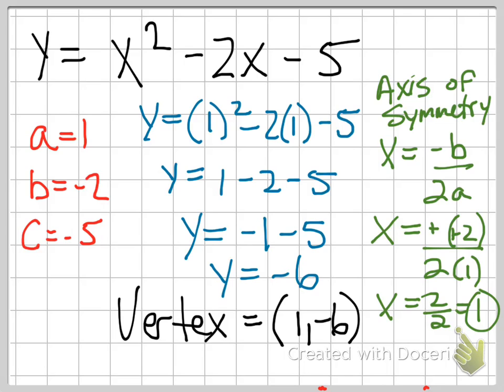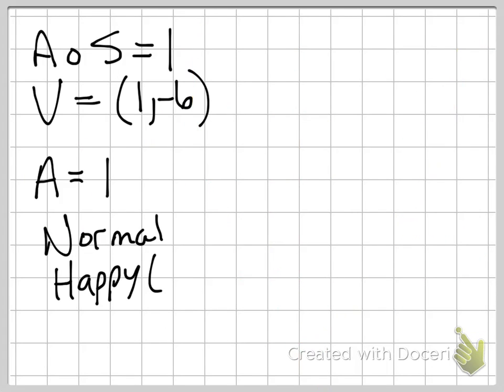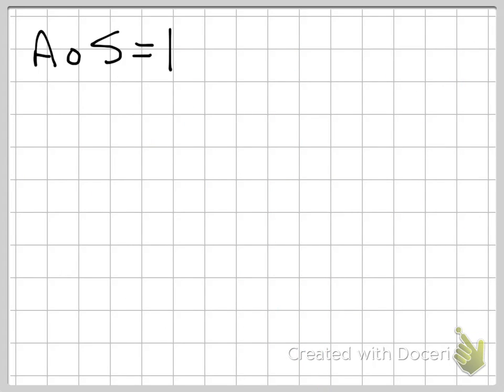So, now that I have both of those pieces of information, I can actually make a pretty rough sketch of my parabola. So, let's go ahead and take a look at that parabola. Whoop, too far. All right. So, we just found out that my axis of symmetry equals one. All right. We also found out that my vertex is at one comma negative six. We also know that the value of a from my original equation is one.